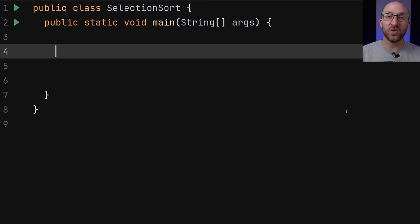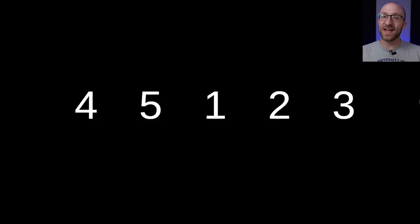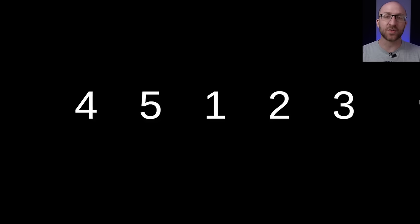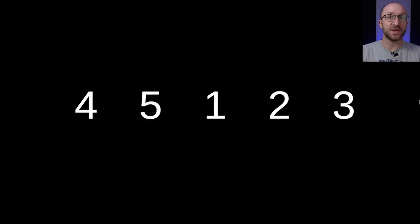We'll jump right into the code in just a second, but first it's a good idea to talk about exactly how the selection sort algorithm works. So let's say you have an array of integers. The job of the selection sort algorithm, or any sorting algorithm, is to put these elements in their natural order, which for integers is going to be least to greatest.